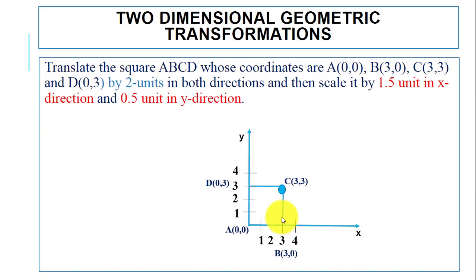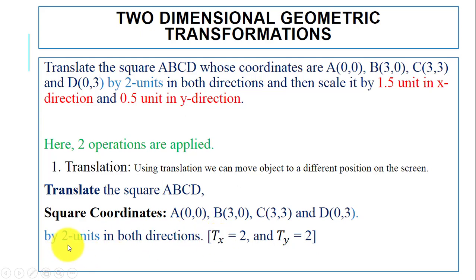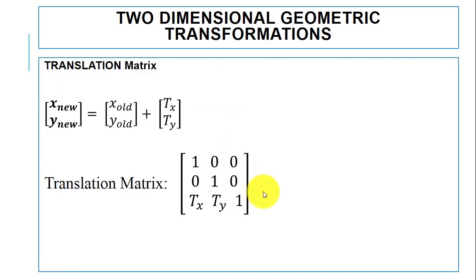We have the square ABCD and its coordinates. We will translate it by two units in both directions, meaning the value for tx is 2 and ty is 2 — in the x-direction and y-direction respectively. For scaling, after translation we will scale it 1.5 in the x-direction (sx = 1.5) and 0.5 in the y-direction (sy = 0.5).